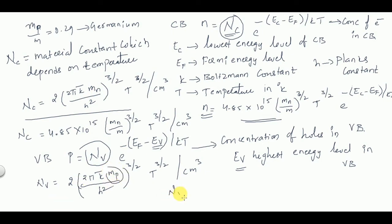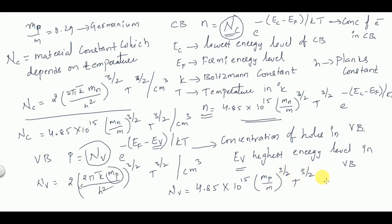In terms of effective mass, NV = 4.85 × 10¹⁵ × (mp/m)^(3/2) × T^(3/2) per cubic centimeter. You can then get the concentration of holes in the valence band for p-type semiconductors. This is the complete concept of effective mass, along with the concentration of electrons in the conduction band and holes in the valence band.